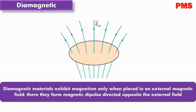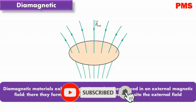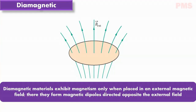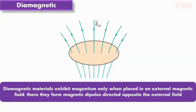We assume that in an atom of diamagnetic material, each electron can orbit only in the clockwise direction or counterclockwise direction. In the absence of an external magnetic field, we assume that the atom lacks a net magnetic dipole moment — the number of electrons orbiting in one direction is the same as that orbiting in the opposite direction, so that the net upward magnetic dipole moment equals the net downward magnetic dipole moment.